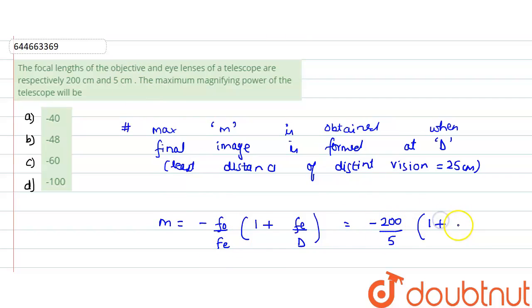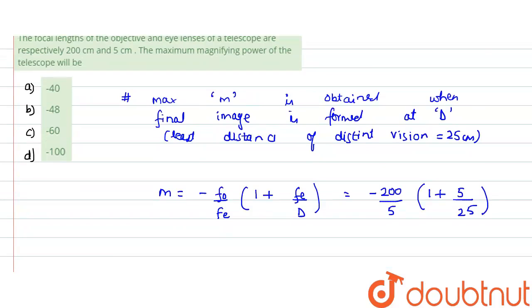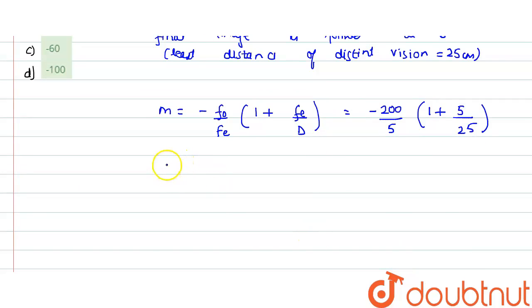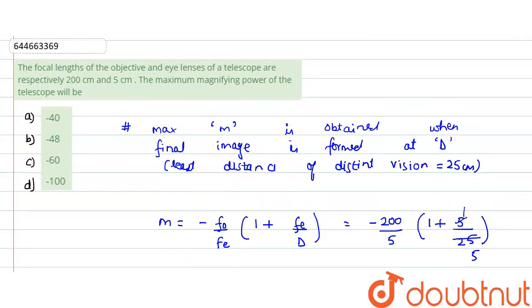Then 1 plus focal length of eyepiece (5) divided by 25. If we solve this, the maximum magnification is minus 40 times 6/5, which equals minus 48. Magnification is dimensionless, so the correct option is b.